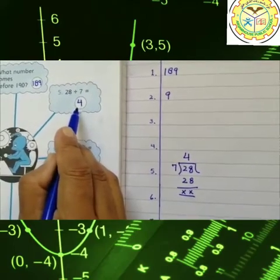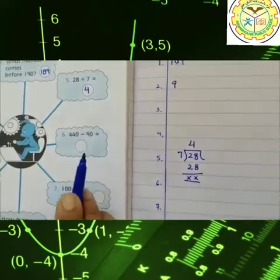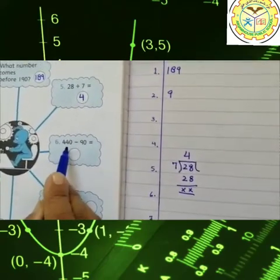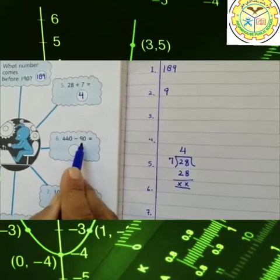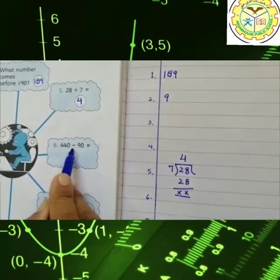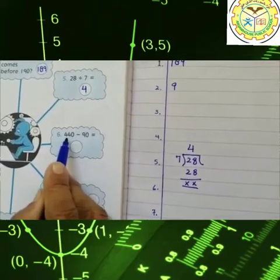And the answer is four. Take this answer and write in this circle. This is the answer of question number five. Okay students, I hope you understand my all lecture. Now question number six: 440 minus 90. In this question we read this symbol. This symbol means minus. Minus means subtract. 440 minus 90.